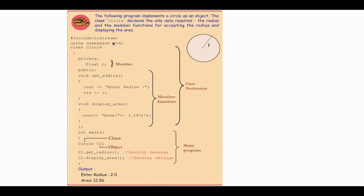First, we will add the header files: #include iostream. Then, using namespace std. Then we will declare a class called Circle. Inside the class, we declare a private variable — a floating point variable: private float r. If we declare a private variable, it will be accessible only within this class.